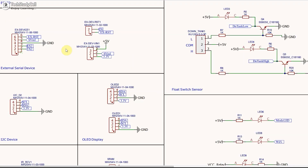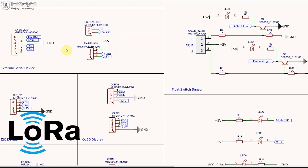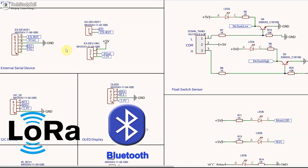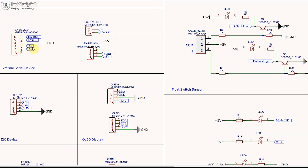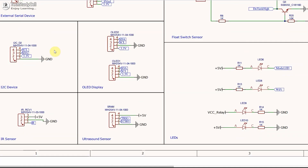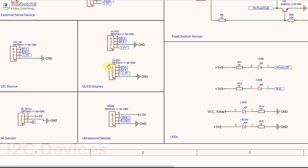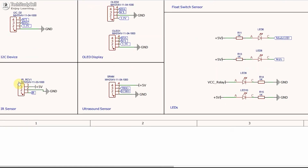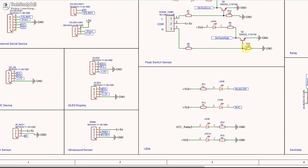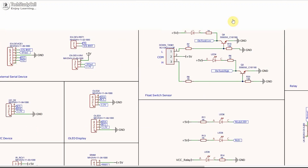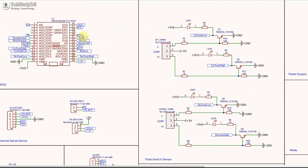Here you can see in this circuit, you can also connect any external device like LoRa or Bluetooth device with ESP32, which will communicate with ESP32 through serial communication. You can also connect multiple I2C devices and an OLED display. And if you want, you can control the pump with an IR remote. So there are a lot of new features to this project. If you want, I will make a separate video on these new features.